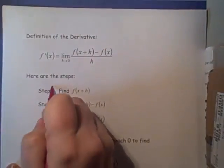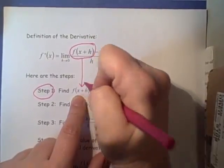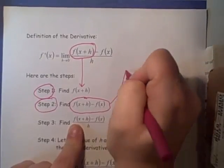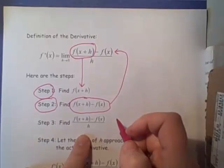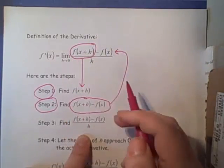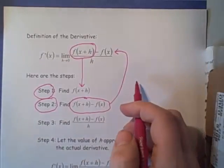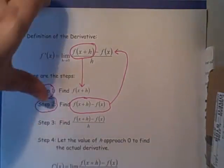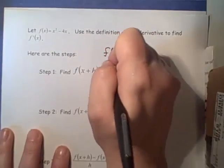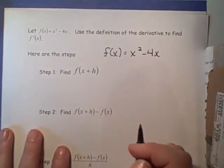Step one: find f of x plus h. Step two: find f of x plus h minus f of x — basically finding the entire numerator. Step three: take that numerator and divide by h, finding the whole expression inside the limit. Step four: calculate the derivative by letting h go to zero. Now let's look at a specific example. Our function is f of x equals x squared minus 4x, and we're using the definition of the derivative to find f prime of x.